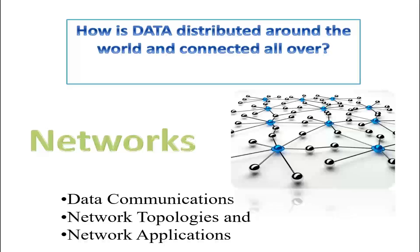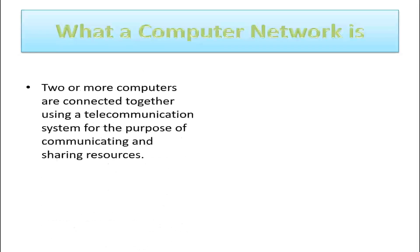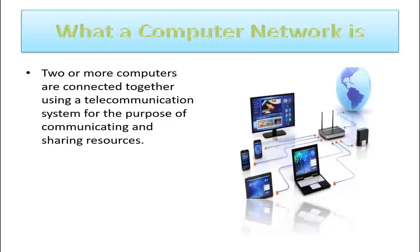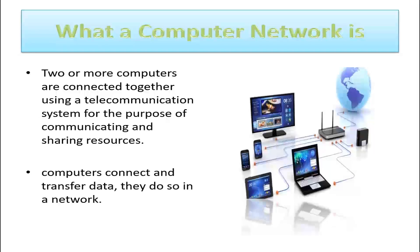Let us begin to understand the terms one by one. To understand data communication, it is important to know first what a computer network is. When two or more computers are connected together using a telecommunication system for the purpose of communicating and sharing resources, it is known as a computer network. In simple terms, when computers connect and transfer data, they do so in a network.